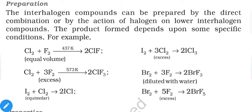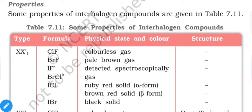Interhalogen compounds can be prepared by direct combination of halogens or by direct action of a halogen on a lower interhalogen compound. The product formed depends on specific conditions. For example, Cl2 + F2 gives ClF, and with excess F2 gives ClF3. Similarly, I2 + Cl2 gives ICl; with excess Cl2 gives ICl3. Bromine forms BrF3, and in excess fluorine forms BrF5.